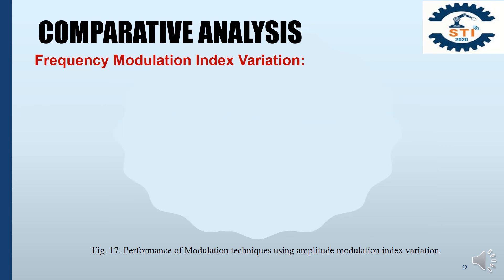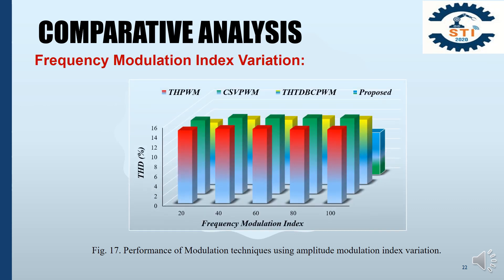Another parameter for comparative analysis is Frequency Modulation Index Variation. Figure 17 displays the performance of modulation techniques using Frequency Modulation Index Variation, where the Amplitude Modulation Index is fixed at 1. From this figure, it is concluded that the proposed switching technique provides significantly better results than other switching techniques for all frequency modulation index values.